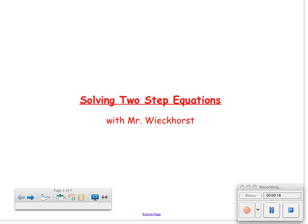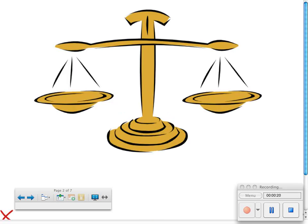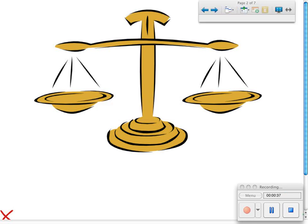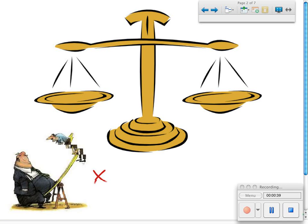Before I teach you this though, I would like to present you with the image of a balance beam. Now, this is a regular balance beam, as you can see, and it's balanced. The whole concept of a balance beam is to keep both sides equal. So if you don't make the sides equal, something like this happens.